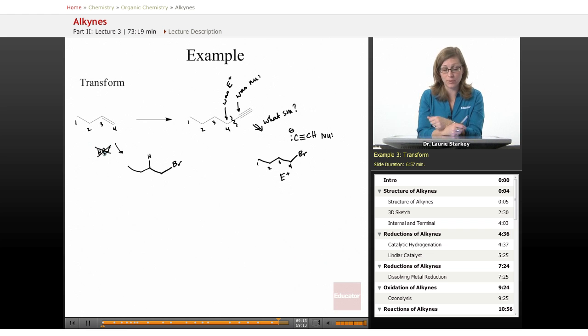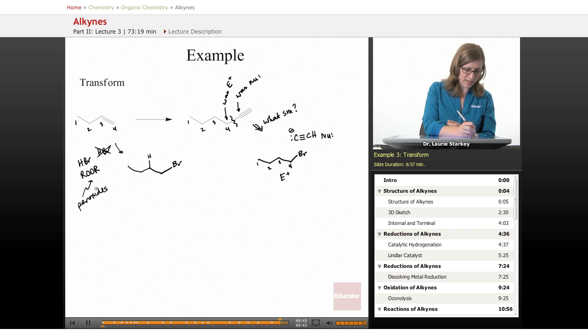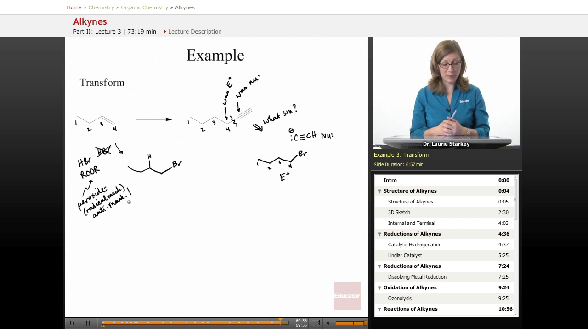So how do we get to anti-Markovnikov regiochemistry? Well, there's a few things that we need to, a few options we've had. We've seen one case where we did hydroboration oxidation, so we could first make the alcohol and then convert it to the Br. But we've actually seen a reaction with Br. It's a good thing we picked Br as our leaving group, because we've seen a reaction with HBr that added anti-Markovnikov. And that was instead of using a mechanism involving HBr as an acid, we threw in some peroxides. When we add in peroxides, we get a radical mechanism, and we get anti-Markovnikov regiochemistry. So that would be a way of adding the hydrogen to the middle carbon and the bromine to the end carbon.